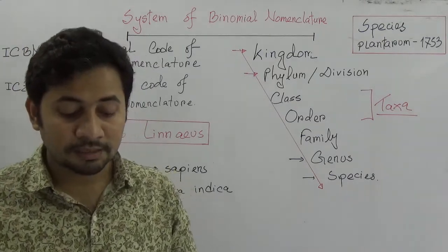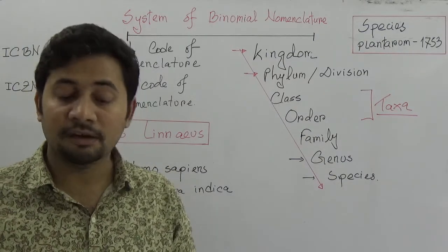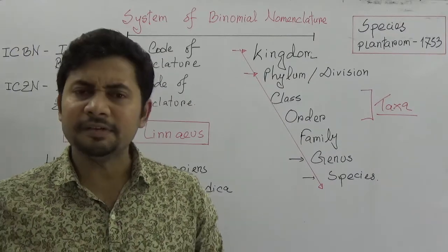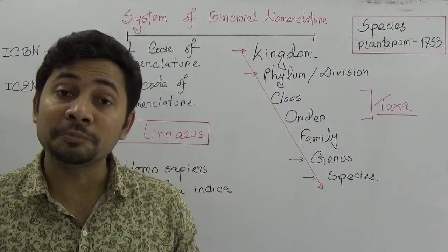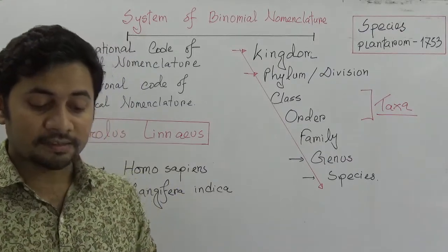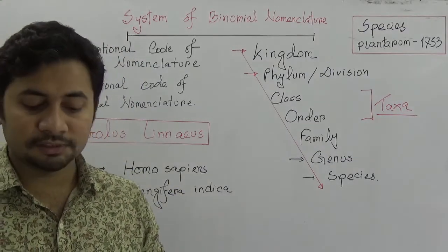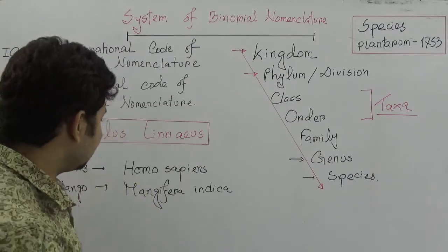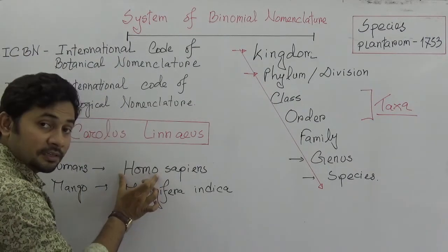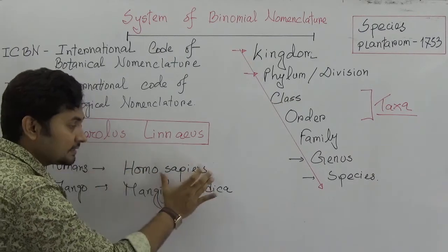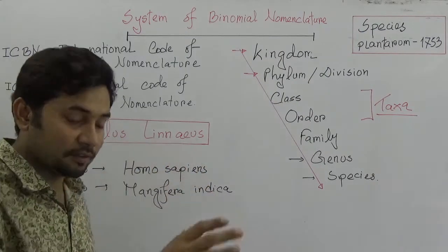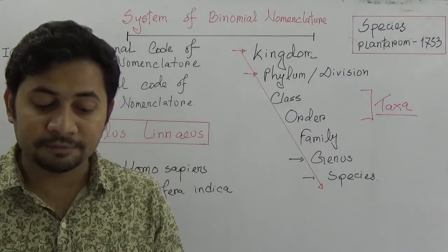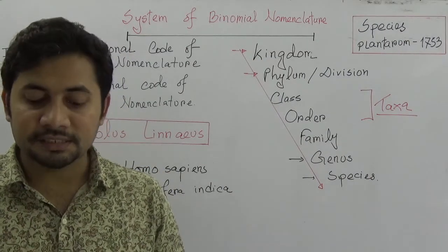Principle number two: every scientific name should have two parts, and the genus name always comes first followed by the species name. Principle number three: the scientific name of an organism should be unique, because a single legitimate name cannot be used for naming two distinct organisms.